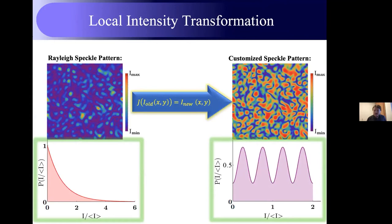The intensity transformation works by finding a mapping such that the statistics change as we want — but it's not always possible because there are physical constraints. For example, we cannot break the diffraction limit. That's why we apply another algorithm to impose physical constraints on our speckle pattern such as the diffraction limit. For this reason, we cannot generate any arbitrary statistics. For example, when I was showing the bimodal distribution, it wasn't exactly bimodal — there was some width to the peaks for exactly this reason.